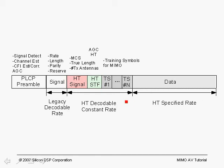Following the training for the high throughput long training fields is the data, and the rate of the data is determined by the high throughput signal field, as is its length. In a legacy type packet, we would have the PLCP preamble, the signal field, and the data associated with a legacy packet.